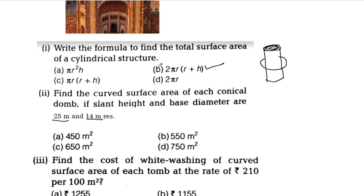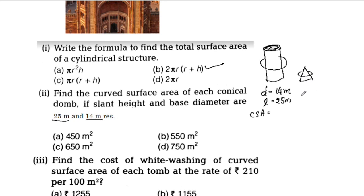The diameter is 14m and the slant height L is 25m. The curved surface area (CSA) of a cone is πRL.